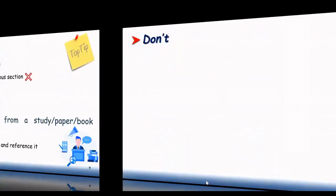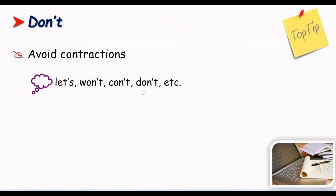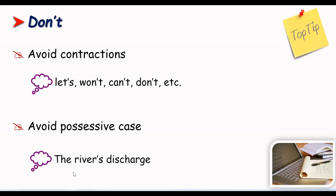Another one, avoid contractions. Let's, won't, can't, don't, it wouldn't be good. Avoid possessive cases. It means such as this one, the river's discharge. It would be better to write the discharge of the river. You know, it's really important to know this tip also.